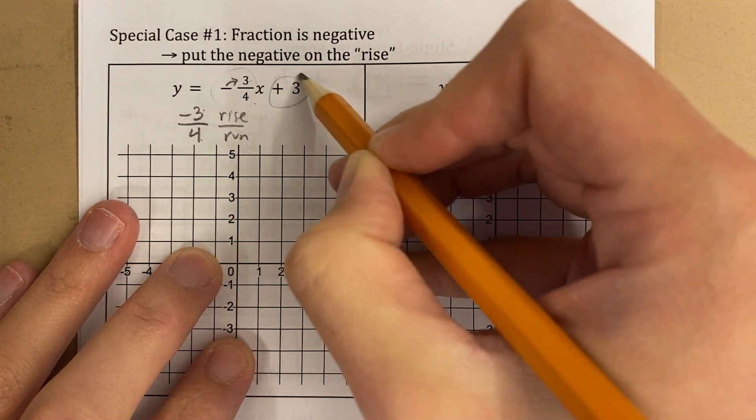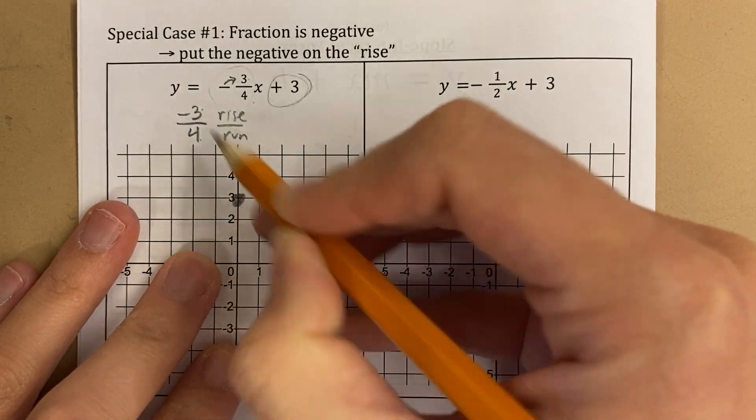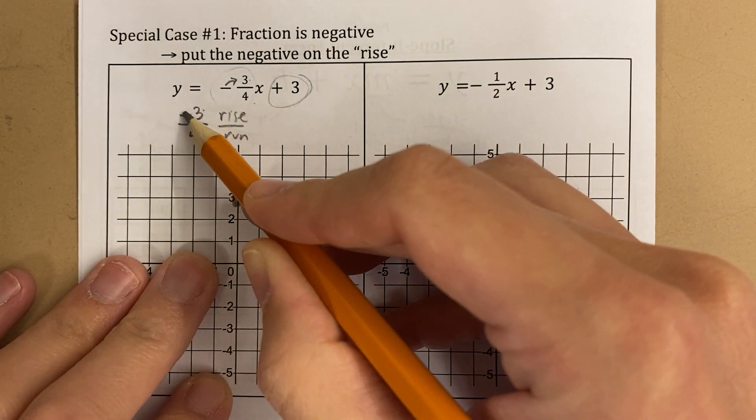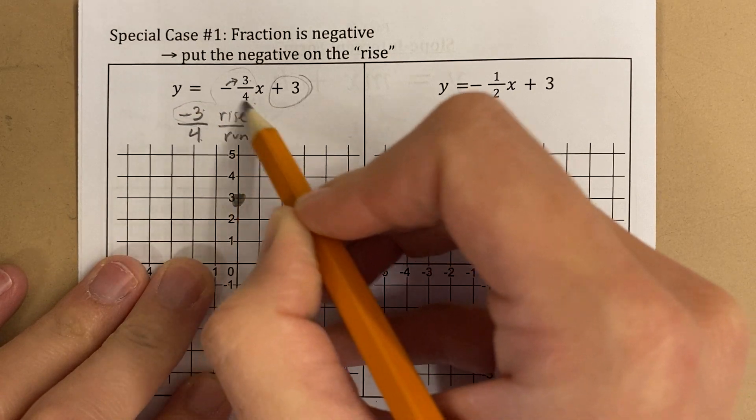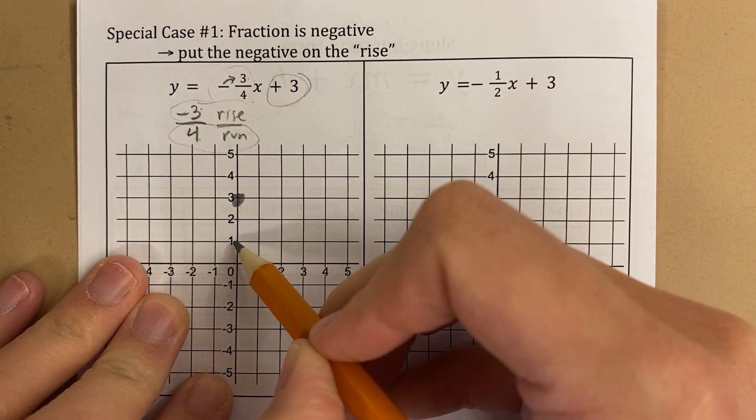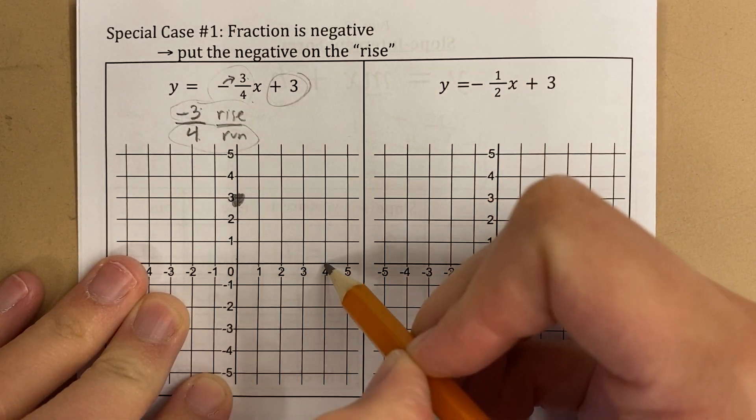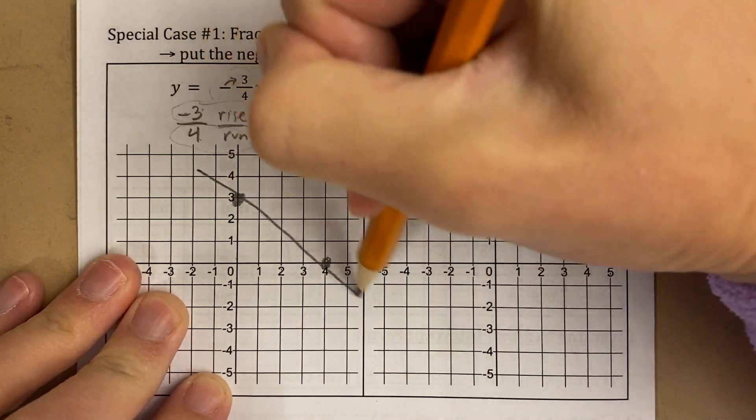So when I graph this, I'll start at my y-intercept, always, always, always, and then I'll go down 3, because it's negative, right, I'm going to go down 3, right 4. 1, 2, 3, 1, 2, 3, 4. And there's my line.